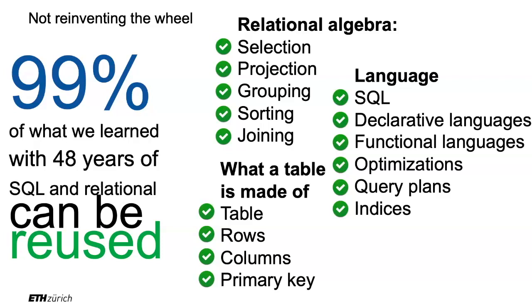Languages like SQL still make sense. The notion of declarative language, functional language, still makes sense. The notion of optimization of query plans, the Greek letters, the query plan, indices — all of that still makes sense. That is great news because it means that everything you've been learning in your bachelor's lecture on relational databases still makes sense and can be taken to the domain of big data.